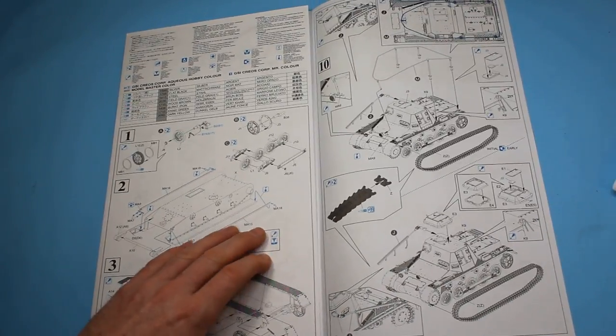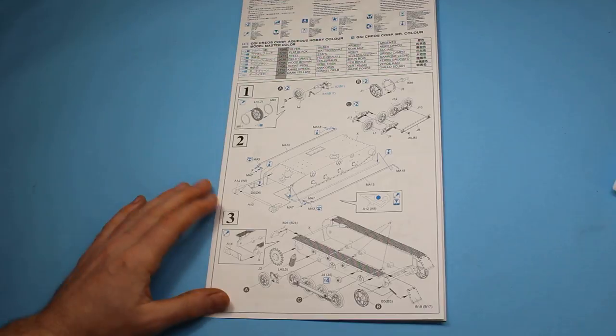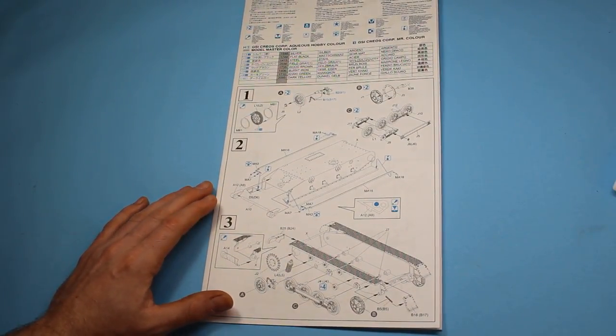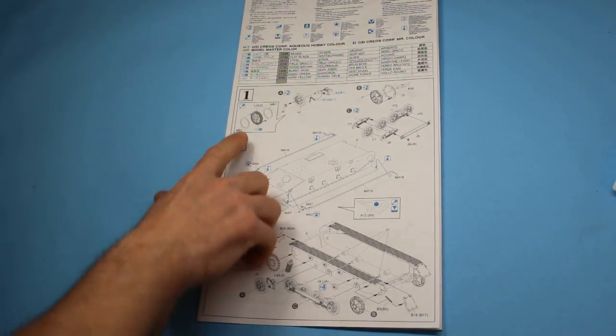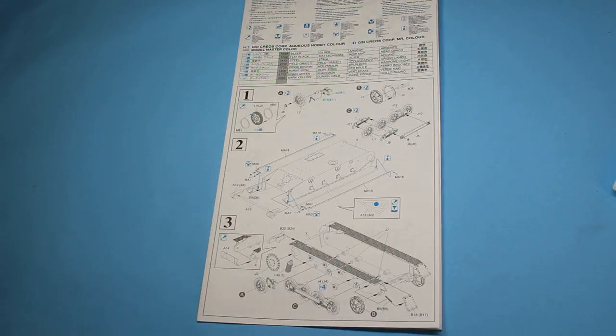Looking at the instructions, this is a general sort of fold-out way that Dragon do it. With step one as with most tanks, starting with the lower hull and road wheels, making that up which is quite simple. There's the rings here, let's see if I can find the bag of them.